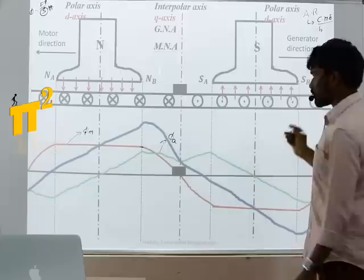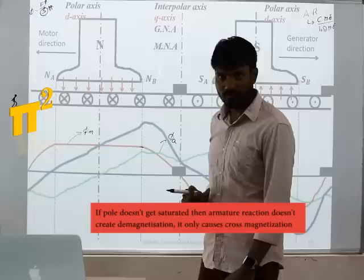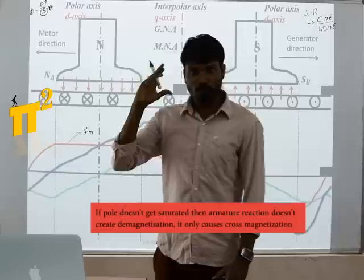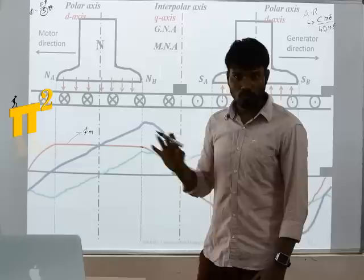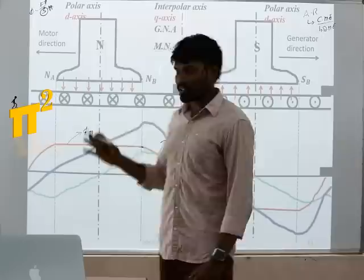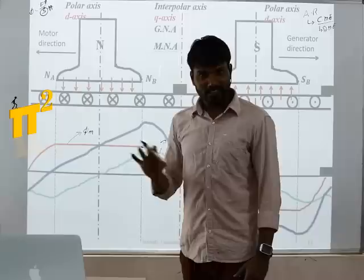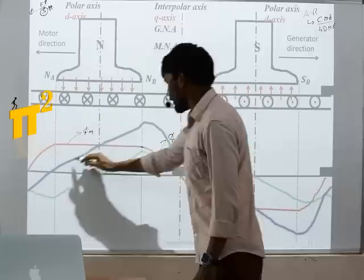To summarize: armature reaction causes primarily a cross-magnetizing effect. Due to this cross-magnetizing effect and saturation of the pole tip, there is also a demagnetization effect. The resultant flux in the air gap is of a peaky wave shape. Different wave shapes: main field flux distribution is trapezoidal, armature MMF is triangular and maximum along the brush axis, armature flux is saddle-shaped, and the resultant flux φM + φA is a peaky wave.